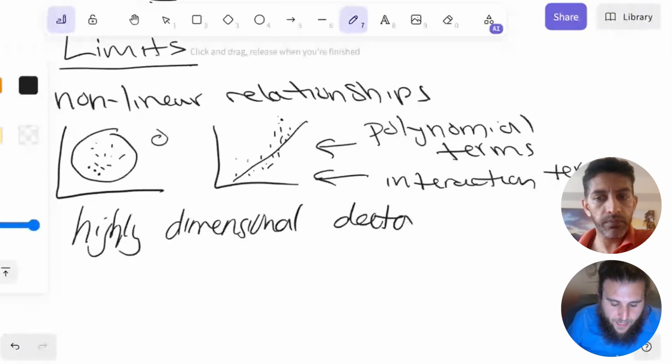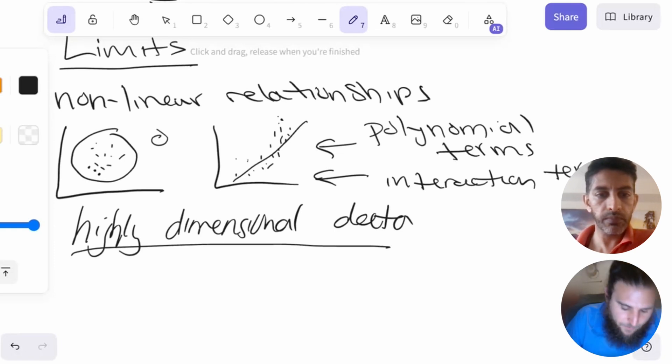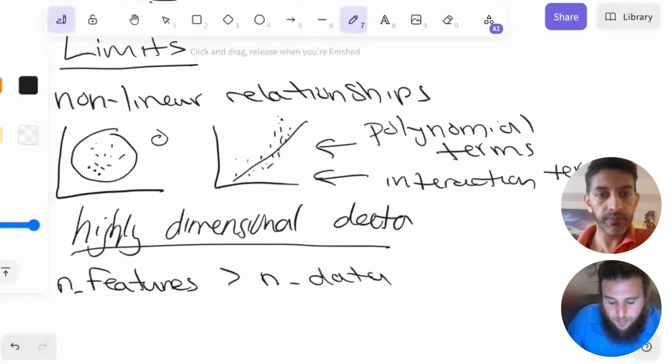In this particular case, what we're saying is we have data with a ton of features and not as much data as we have features, or there's a low ratio of features to data. And in fact, if you have more features, if n features is greater than n data, you cannot compute a linear regression in this particular case using standard OLS. You can still do it with gradient descent.